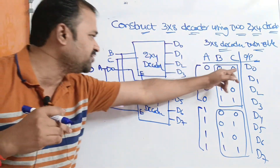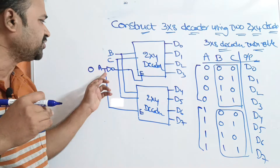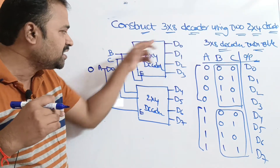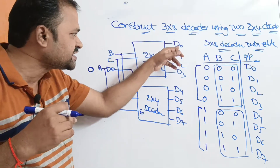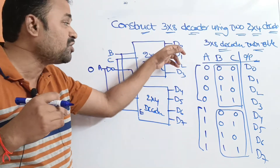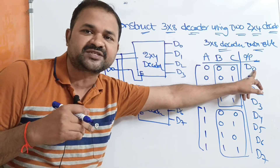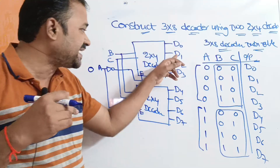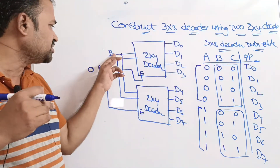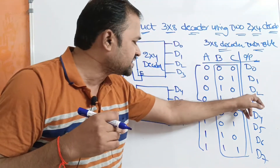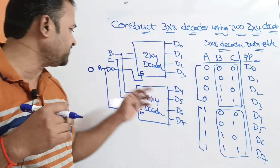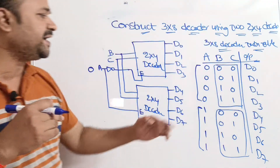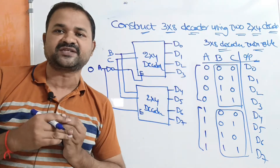When BC is 00 and the enable input is 1, the first 2x4 decoder produces the first output — the first output line D0 is activated. If the input is 01 then the second output line D1 is activated. If the inputs are 10 then the third output line D2 is activated. If the combination is 11 then the fourth output line D3 is produced as the output.